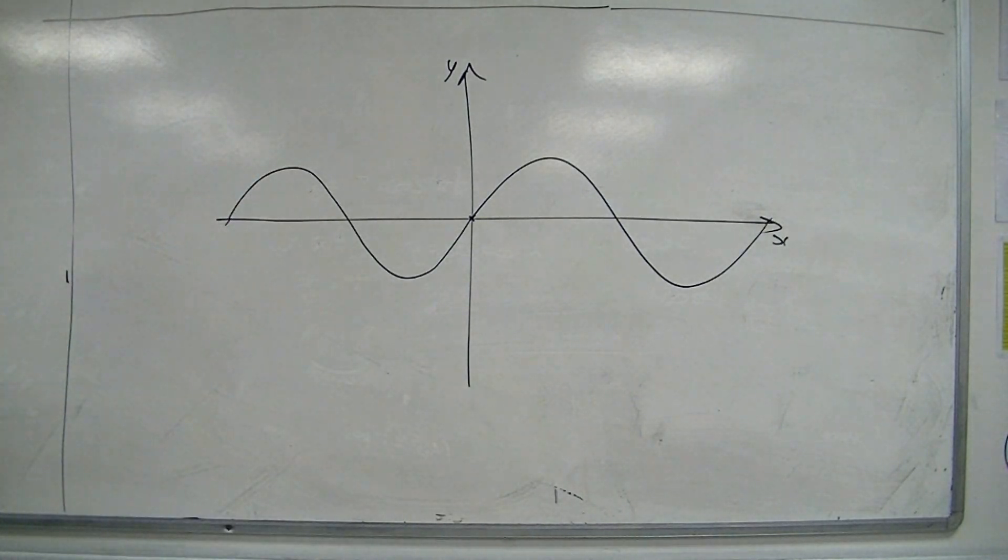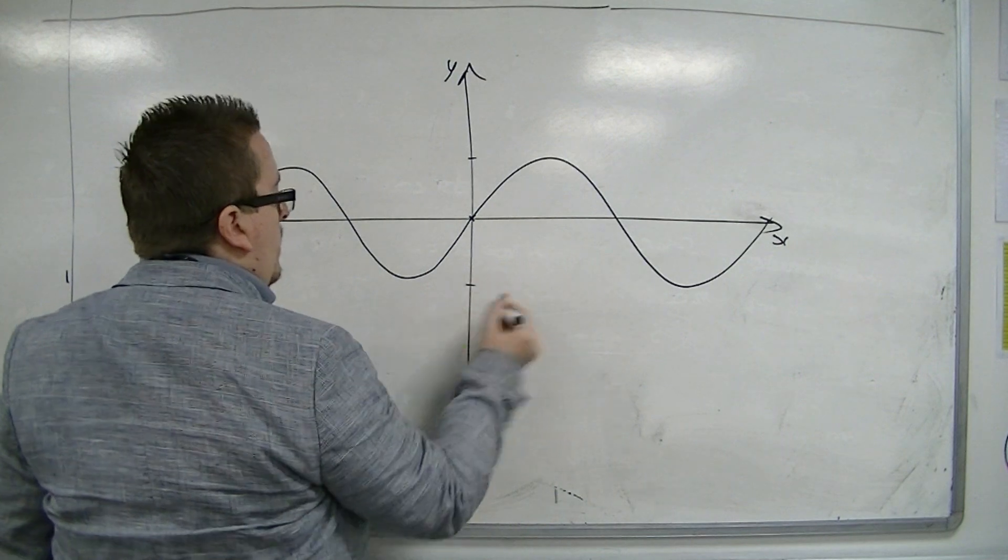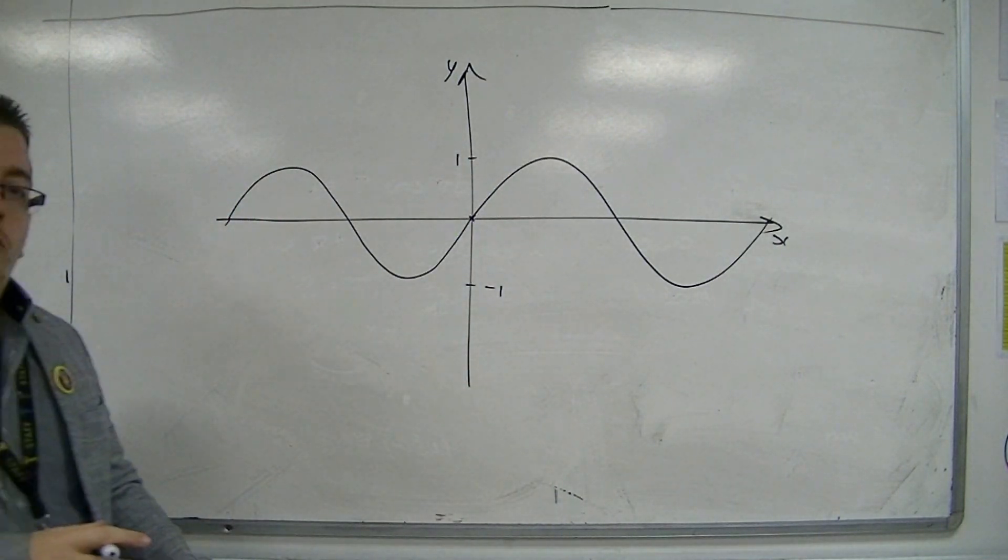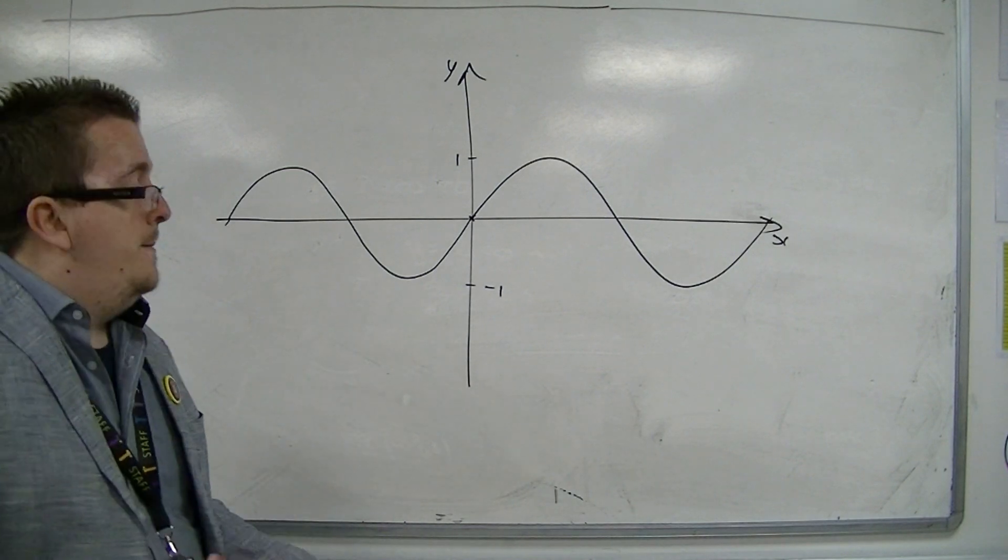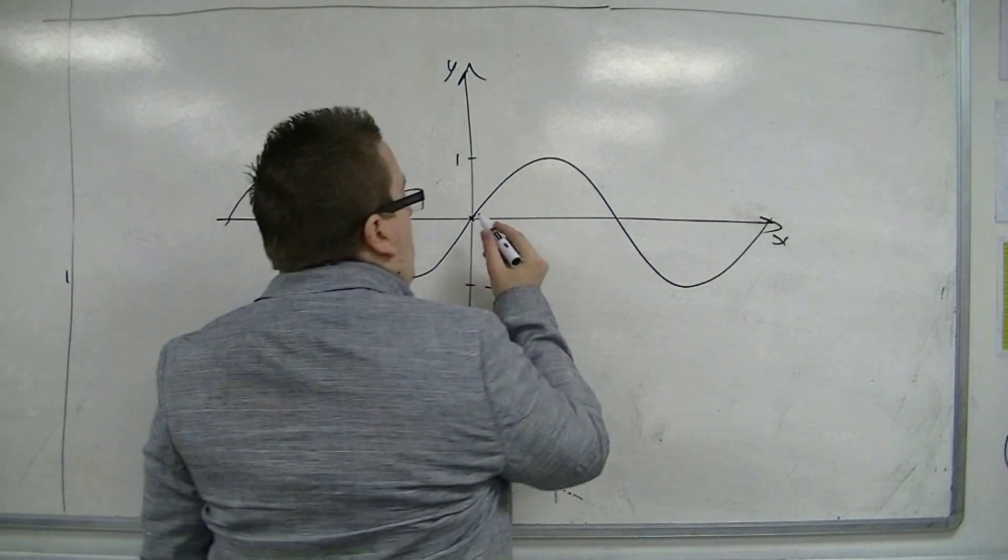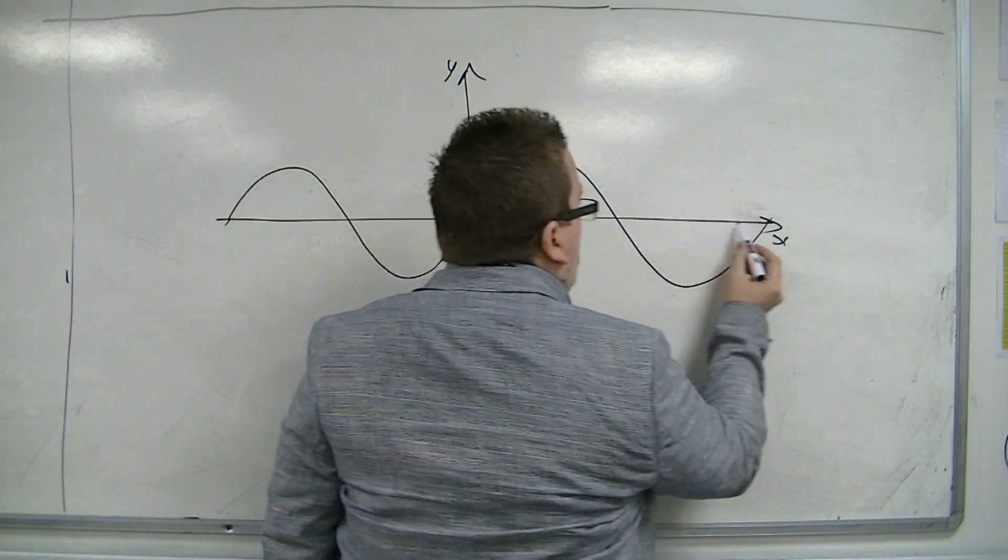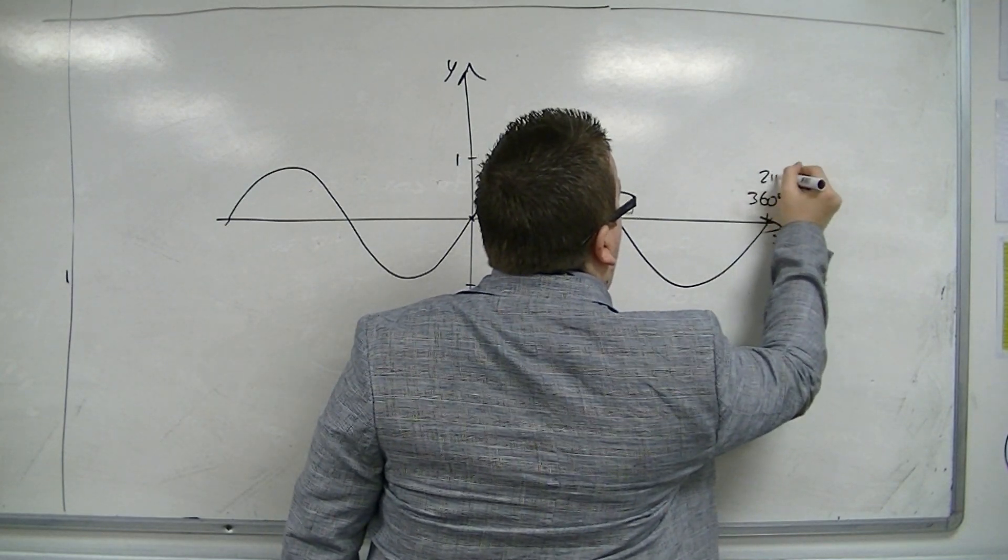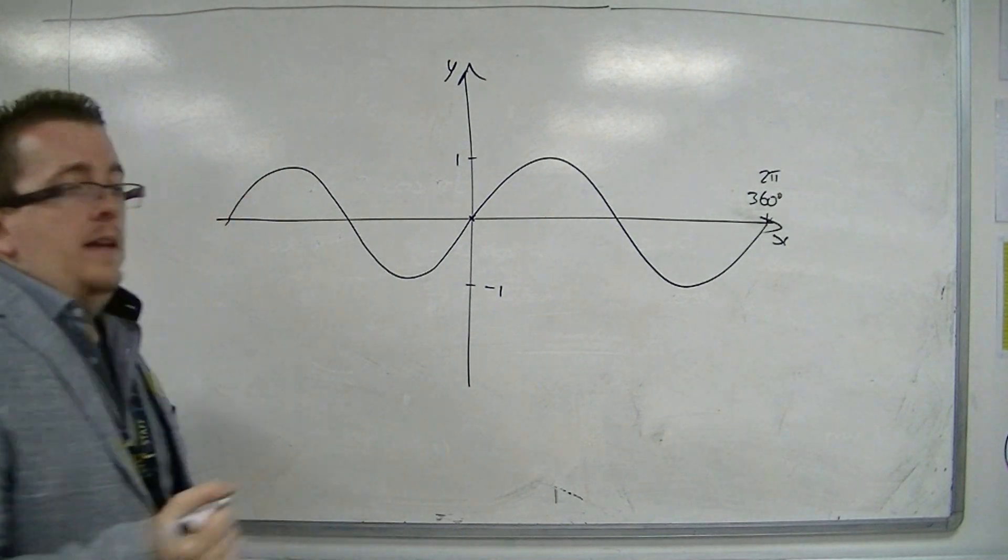It has a range between minus one and one, so it's got a minimum value of minus one, maximum value of one. And it's going from zero to 360 degrees, or two pi if we're in radians.